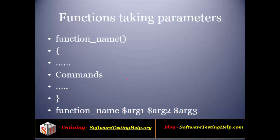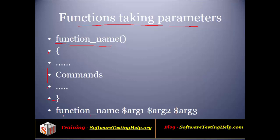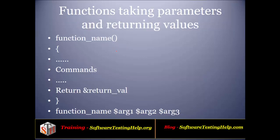Now, how can we pass parameters using functions? Again we give the function name — this is your function definition containing your function_name — then the block of code containing a series of statements inside the function definition. Then we need to call that function using arguments: function_name followed by arg1, arg2, and arg3. This is how you can pass your arguments or parameters to your functions.